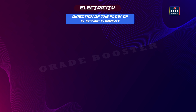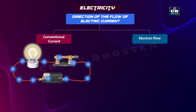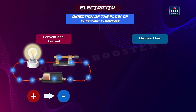The direction of the flow of electric current can be described in two ways: conventional current and electron flow. Conventional current is the direction in which positive charges would flow. By convention, it is defined as flowing from the positive terminal to the negative terminal of a power source. This convention was established before the discovery of the electron and is still used today in most circuit diagrams.